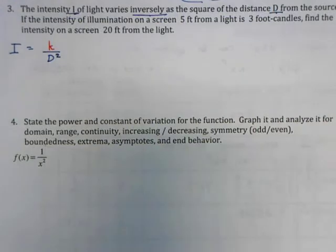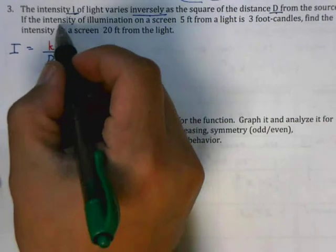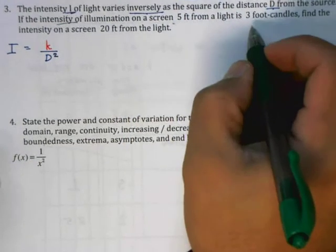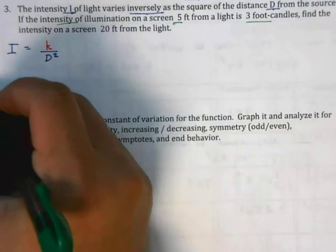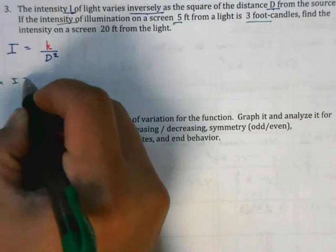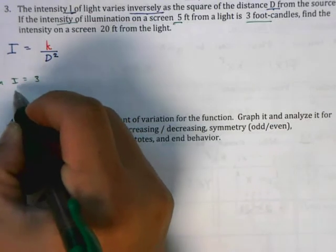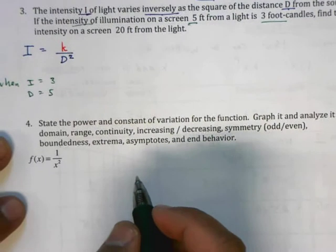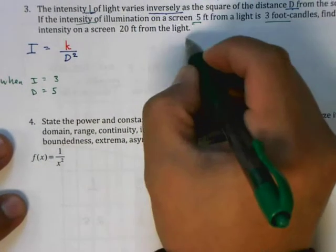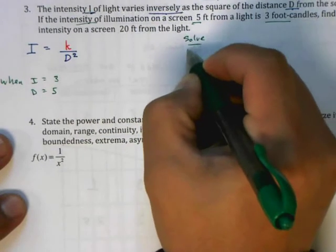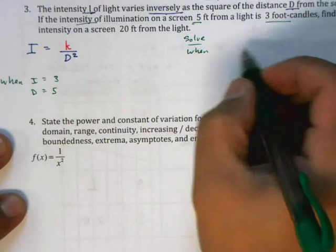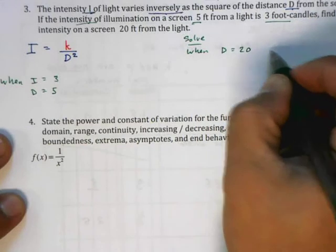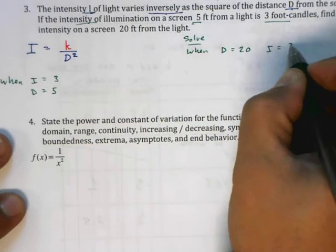The second part here says that when the intensity is 3, the distance is 5. So when I equals 3, D equals 5. These are the givens. What we're asked to solve for is when D equals 20, what is I equal to?